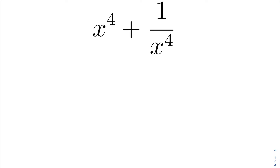We want to factor x to the fourth plus 1 over x to the fourth. Going through factoring techniques, the first thing to look for is a GCF — I don't have one. Then: difference of squares? No. Sum or difference of cubes? No. Factor by grouping? Not really seeing that — to factor by grouping you typically need 4, 6, 8, or 10 terms.